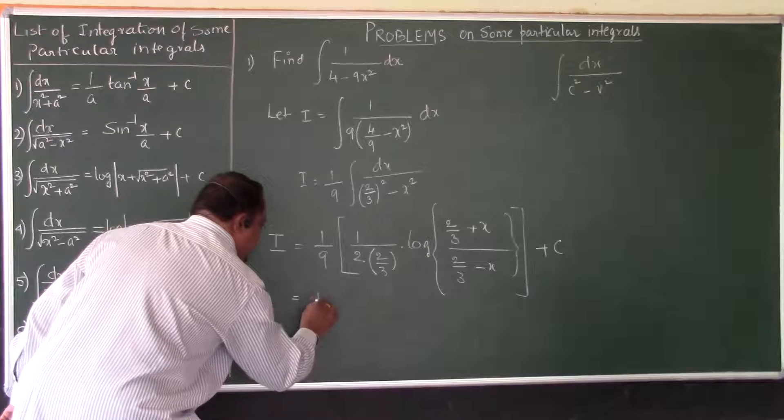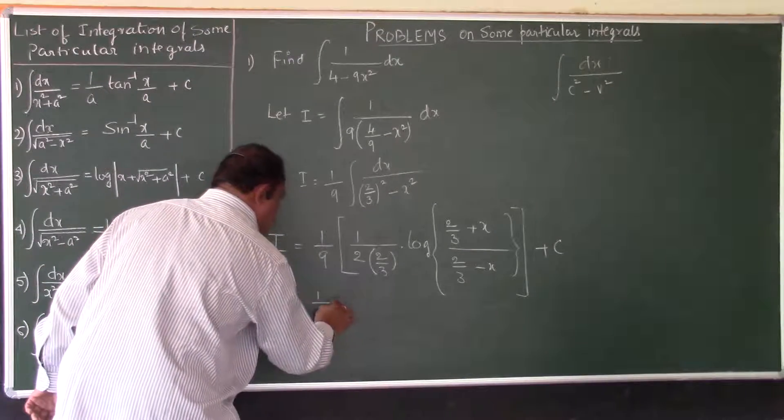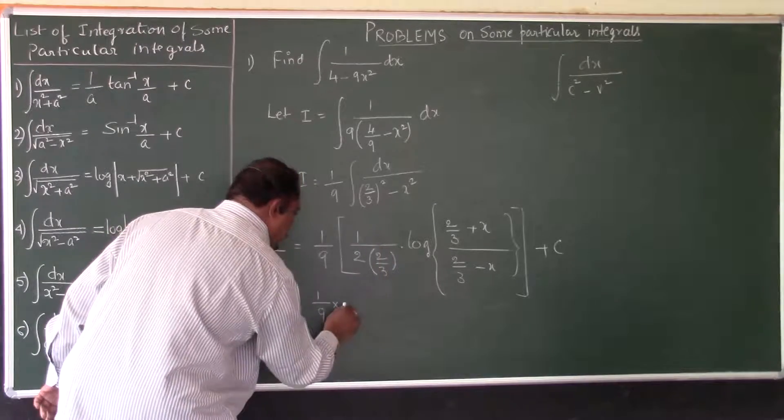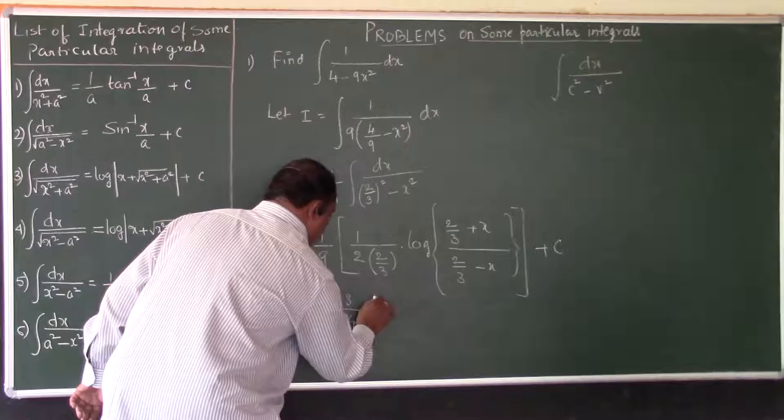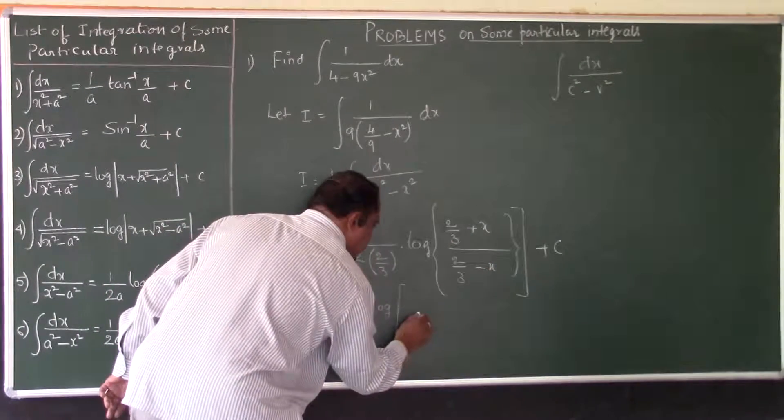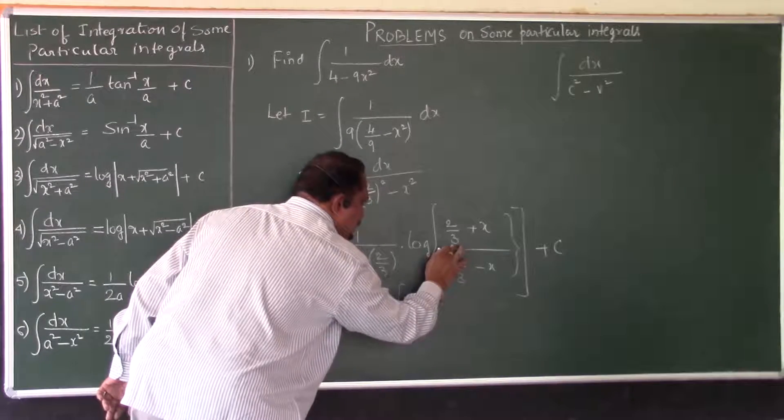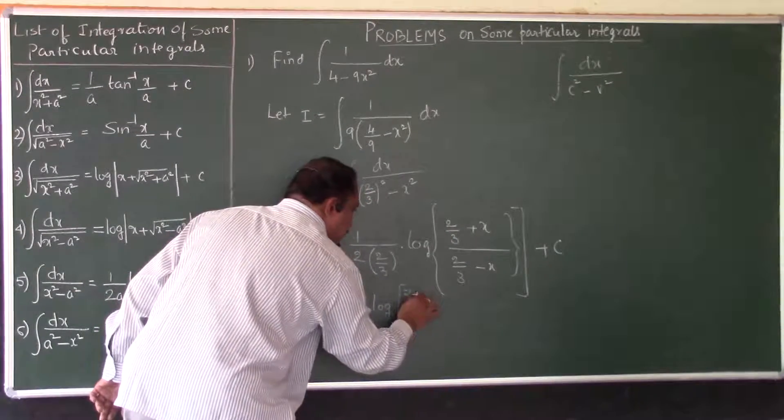Now we have to just simplify that is all. 1 by 9 into, now 3 goes to the numerator, 2 into 2 is 4 into logarithm of. You can take LCM here. 3 is the LCM there in the numerator. 3 divided by 3 is 1. 1 into 2 is 2 plus.